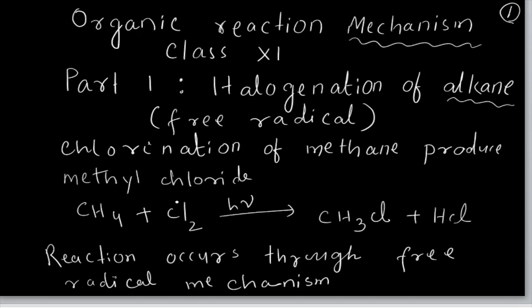What is a free radical? A covalent bond is formed by the sharing of two electrons from one reactant and from the other reactant. If the covalent bond undergoes homolysis, then each fragment gets one electron. For example, A–B undergoes homolysis to give A• and B•. Each one is called a free radical.